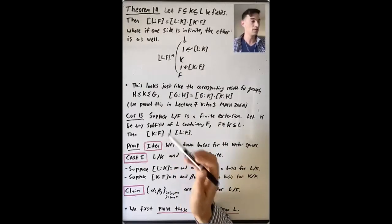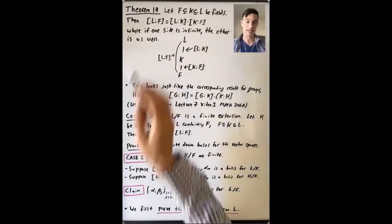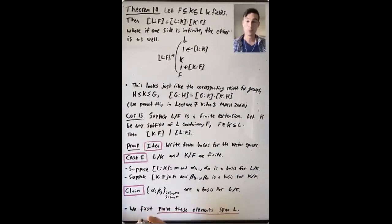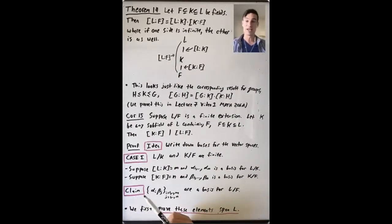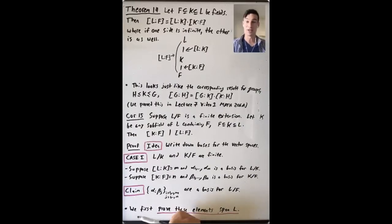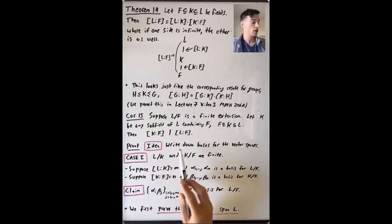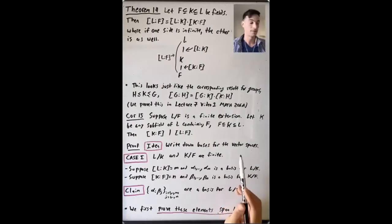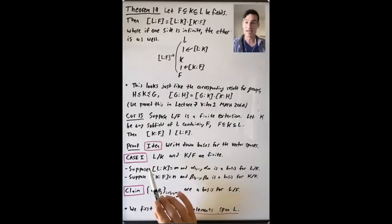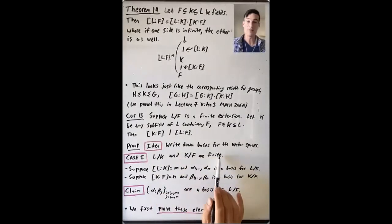Let's prove Theorem 14. The idea is that this is really just a statement about vector spaces, where you think of a field extension as giving the bigger field as a vector space over the smaller field, where the degree equals the dimension of that vector space. So we're going to write down bases for all of these vector spaces. We'll separate the case where L over K and K over F are finite from the case where one of these is infinite.